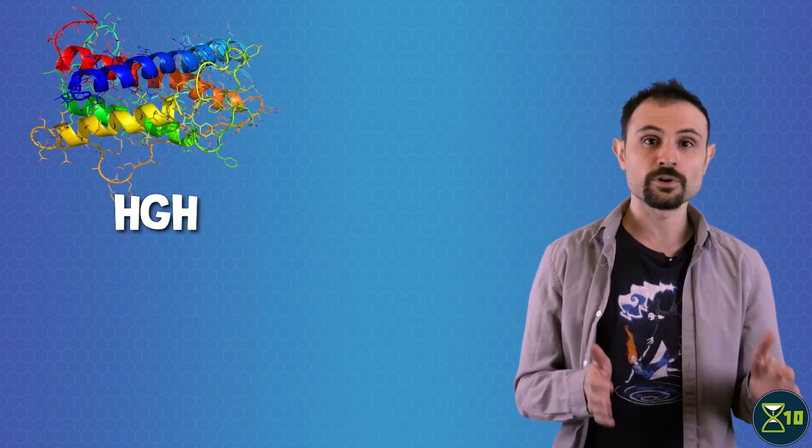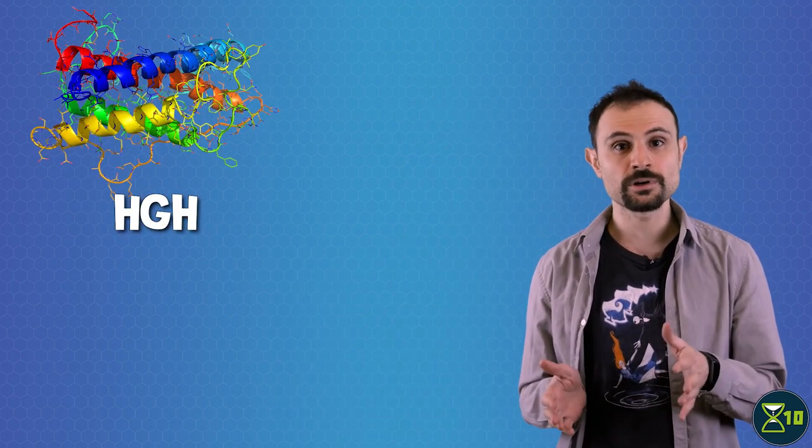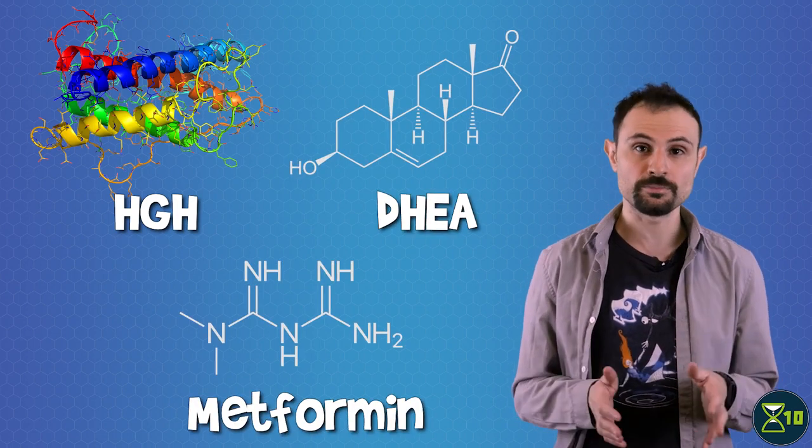TRIMM enrolled nine fairly healthy men between the ages of 51 and 65 and treated them for a year with a mix of human growth hormone and two other compounds known as DHEA and Metformin. Previous studies in both mice and human HIV patients have shown that growth hormone safely induced regrowth of thymic tissue. That's why TRIMM patients were given it.